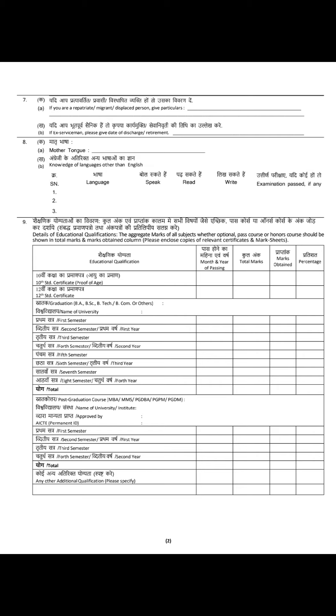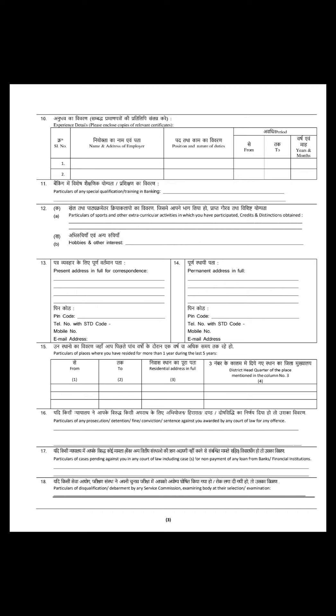इसमें आपको अपने जितने भी semester wise या year wise marks बने हैं graduation के time पर, 10th, 12th - वो सब आपको mention करने हैं: month, year of passing, total marks, marks obtained, and percentage - यह सब properly एक-एक चीज़ ध्यान से भरियेगा। उसके बाद 10th point है जो आपका experience है - अगर आप currently कहीं job कर रहे हैं तो यहाँ mention कर सकते हैं। 11th point है special qualification - अगर आपने कुछ किया है तो वो यहाँ mention कर सकते हैं।